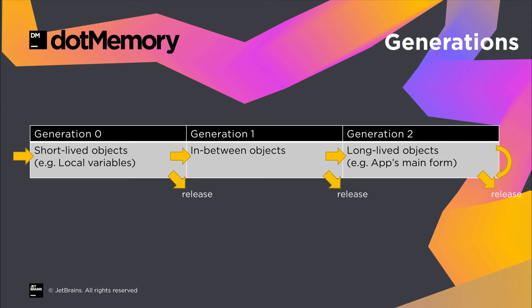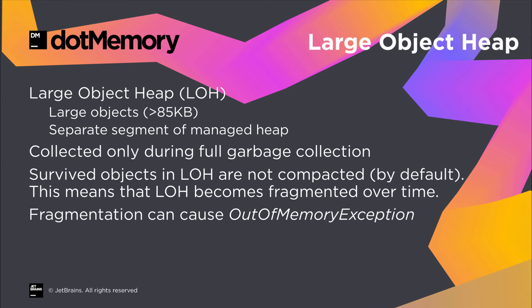Now, why all these different generations? Going through the objects in memory is quite time-consuming for the runtime. Our application will be paused for a brief moment when this happens. To make this pause as short as possible, the .NET runtime partitions its work across these generations, so typically it should only run on a small subset of objects. There's one special heap — the large object heap. Objects larger than 85 kilobytes are stored in this memory segment.